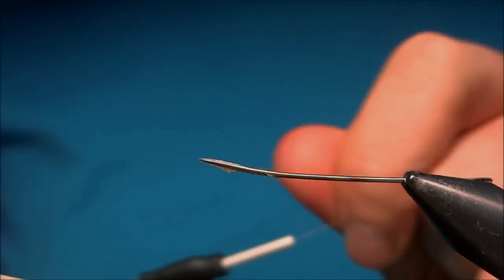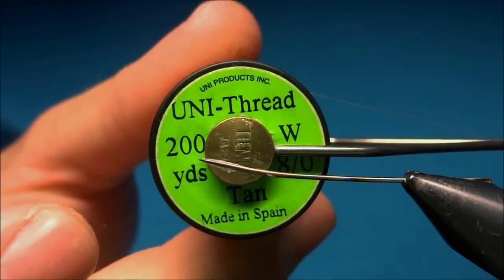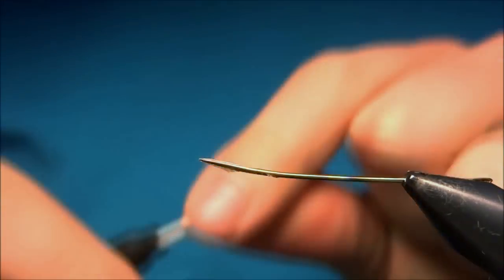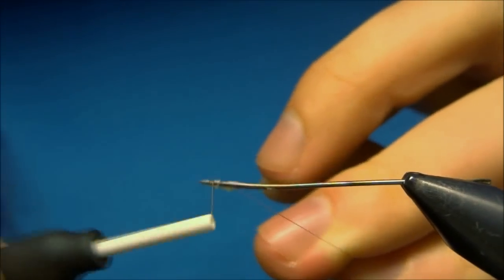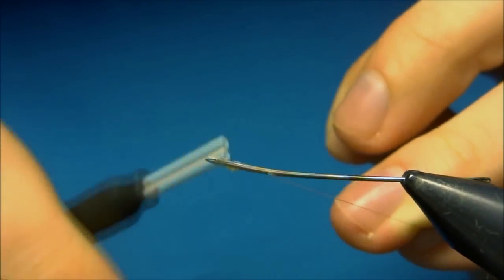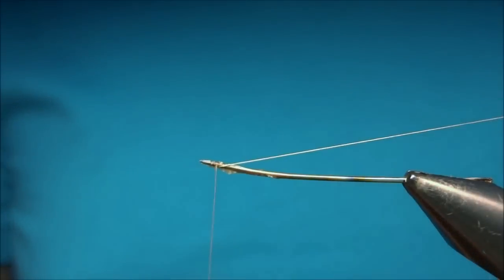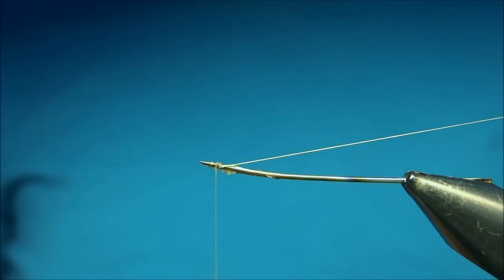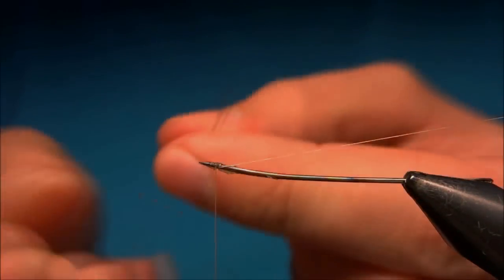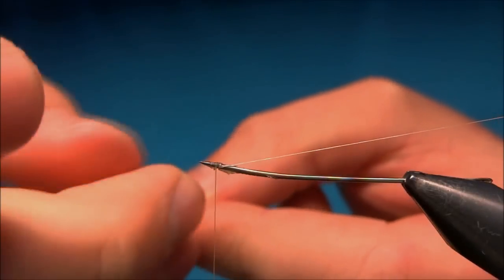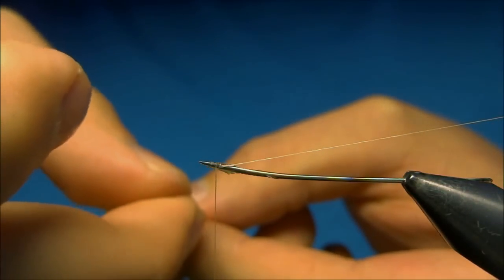The thread I'm using is unithread 8-0 in tan and we'll start by putting down some thread at the end of the needle. For the tail I use microfibits in dark brown. As for the naturals I use three tails and I try to align them as much as possible.